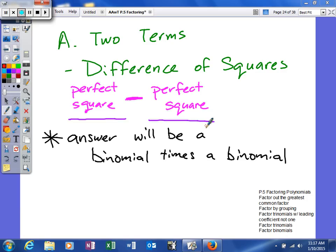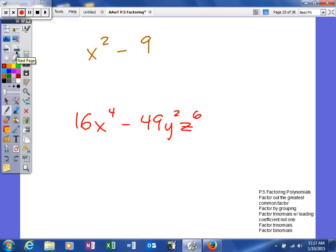The next thing is the first term has to be a perfect square. The next thing is the second term has to be a perfect square, and there has to be a minus sign in between. If you have that, then you will have difference of squares, and we'll talk about how to factor it. One thing you need to know is the answer will be a binomial times a binomial, so very similar to what we have done in the past.